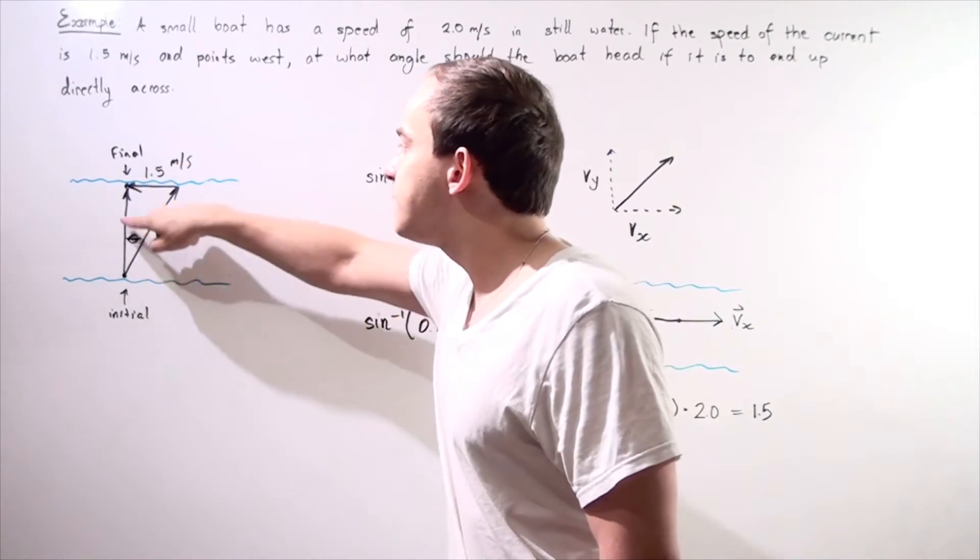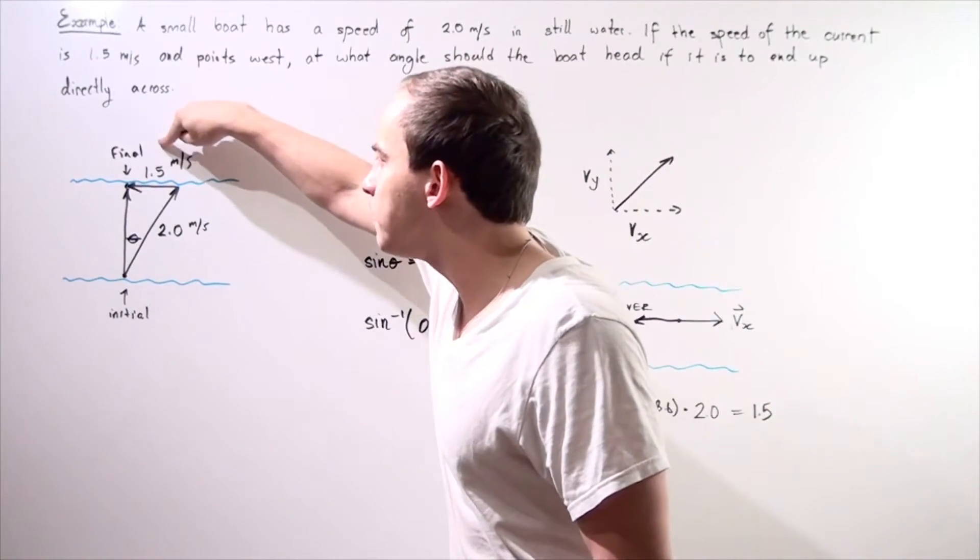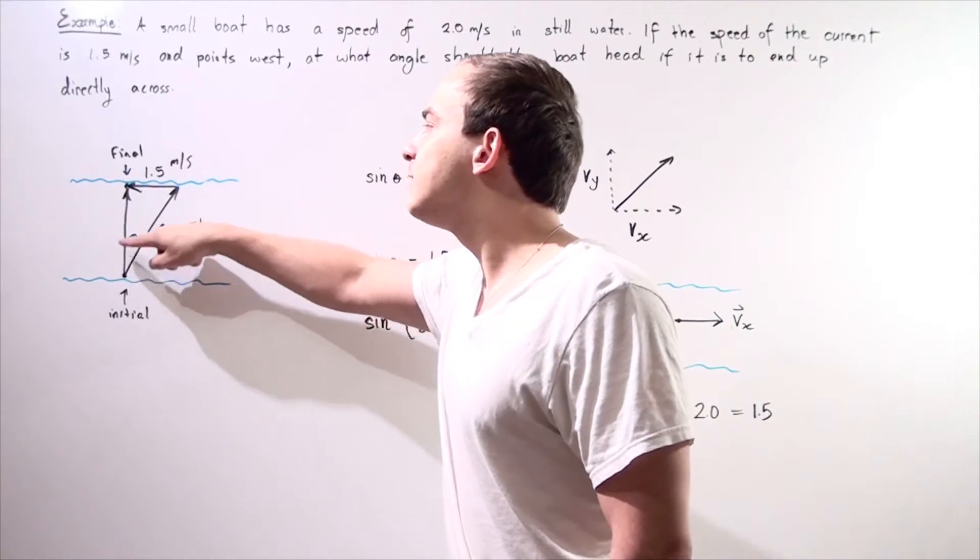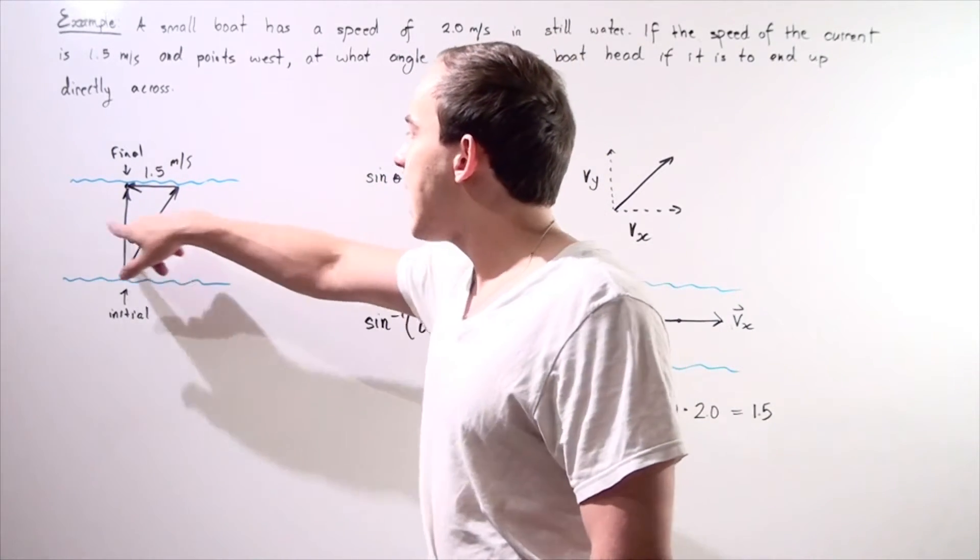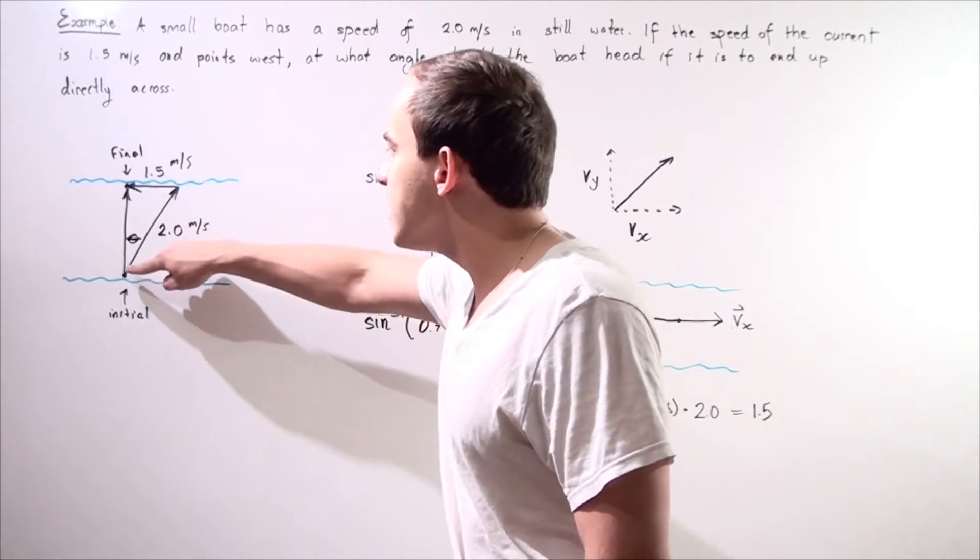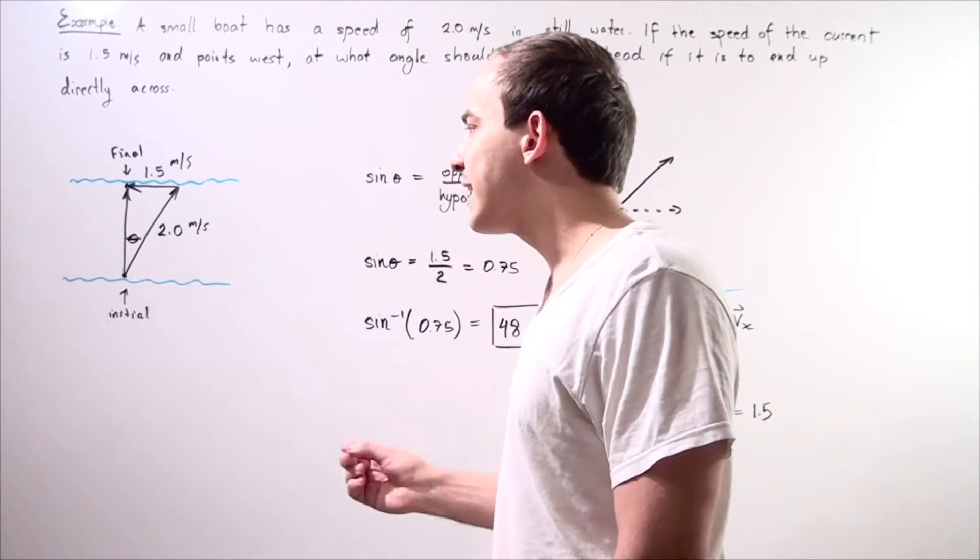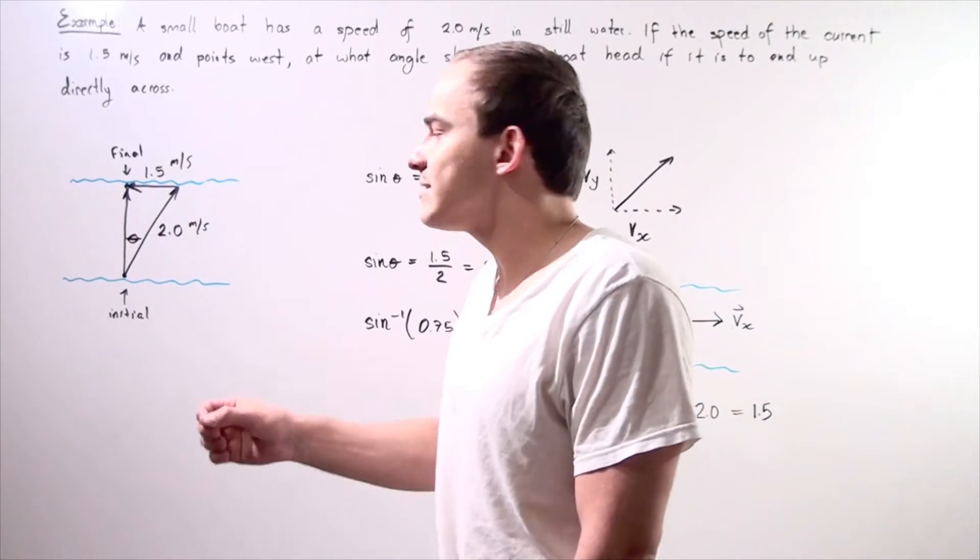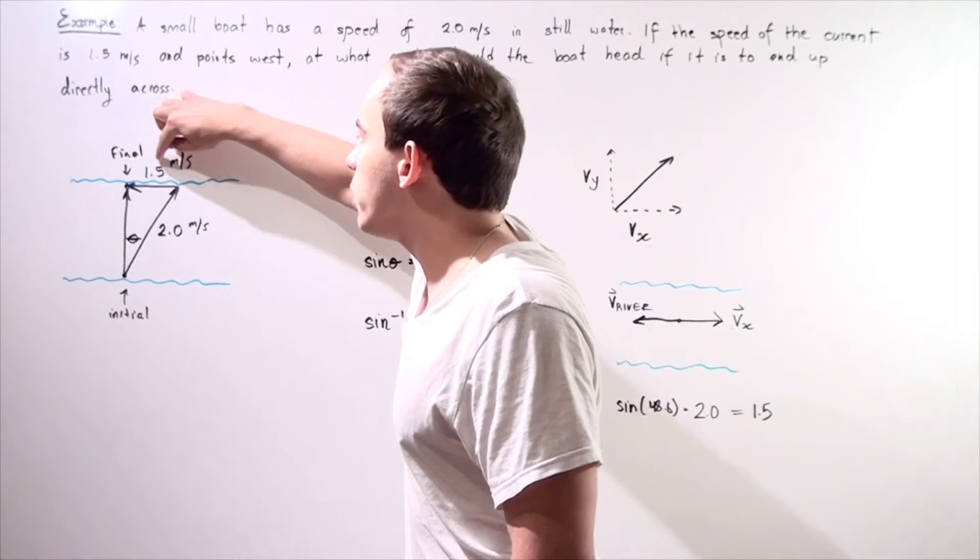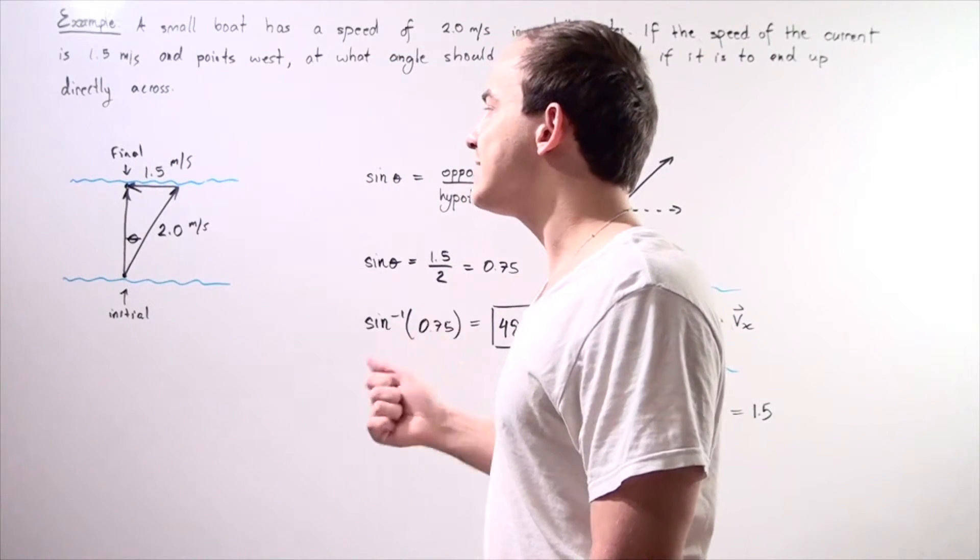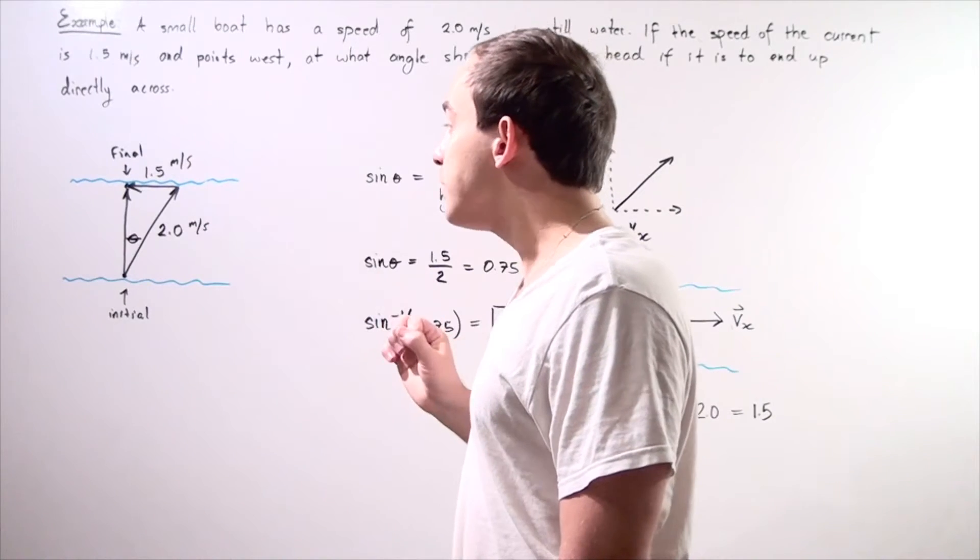This vector beginning at our initial point and ending at the final point is our relative velocity of the boat. Let's label our sides. Our hypotenuse is 2.0 meters per second—it's the actual velocity of the boat in still water. This 1.5 meters per second is the velocity of our river, the current of the river, and it points in this direction.